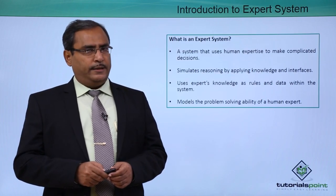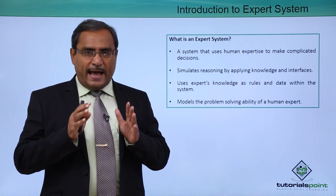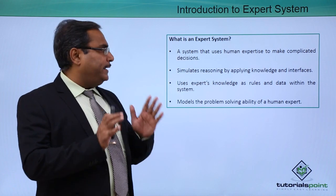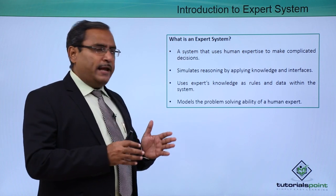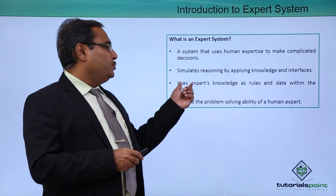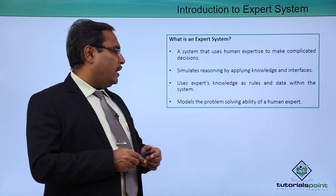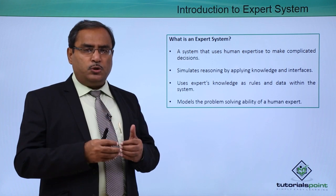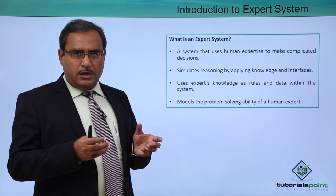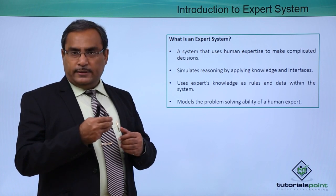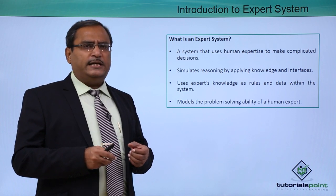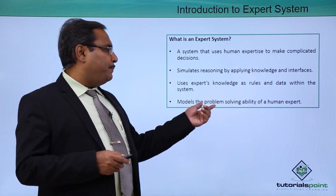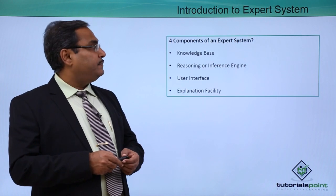Introduction to Expert System. At first we are going to define what is an expert system. It is a system that uses human expertise to make complicated decisions, simulates reasoning by applying knowledge and inferences, and uses expert knowledge as rules and data within the system. This expert system can be rule-based, where rules have an if-then structure — whenever the respective condition is true, the then part will be executed. It also represents data in the form of facts, and models the problem-solving ability of human expertise.